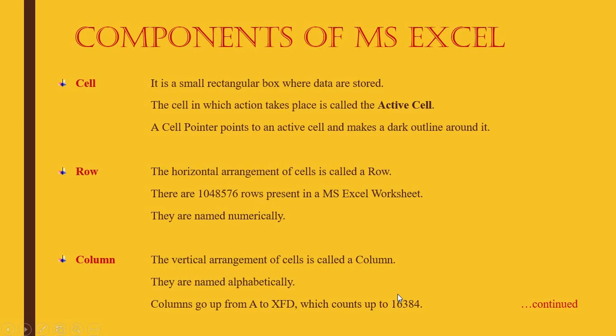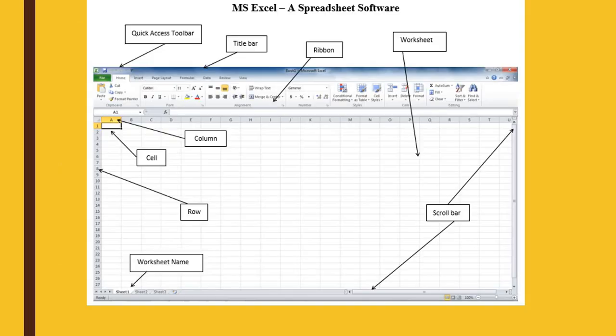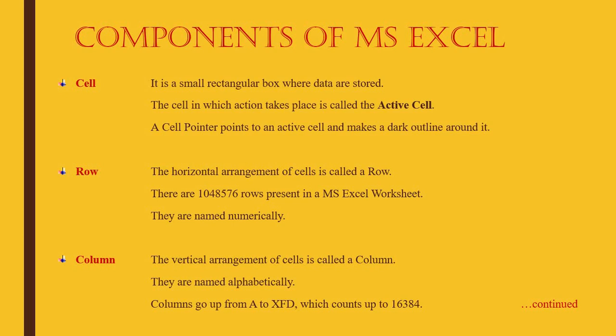Components of MS Excel: a cell is a small rectangular box where data is stored and activity takes place. The one with a border is called an active cell. Row means horizontal arrangement of cells, and column means vertical arrangement of cells.